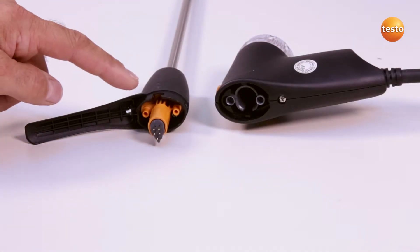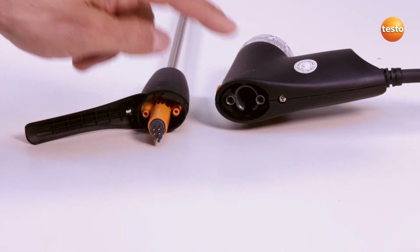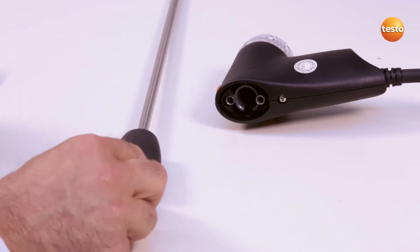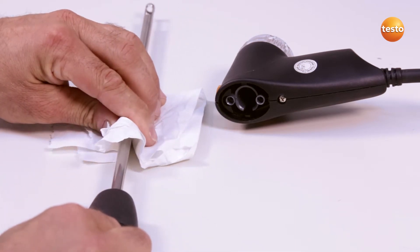The flue gas ducts in the probe shaft and the probe handle can be cleaned out using compressed air. External cleaning is done with a cloth. Brushes should not be used.